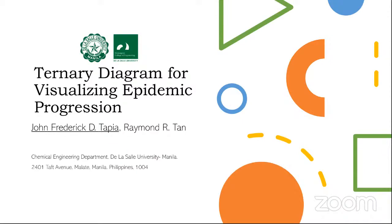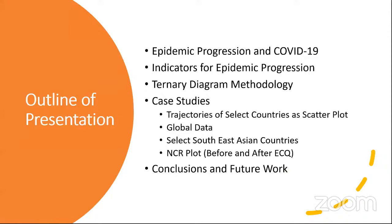In the recent news here in the Philippines, we have been tracking how many cases have been added daily, how many have recovered, and how many died due to COVID-19. We thought of a visualization in which we combine these three variables and plot them in a ternary diagram. I'll discuss the epidemic progression and COVID-19, including the limitations of the epidemic curve that we use to track the disease, and some indicators for epidemic progression including the rates and the numbers.